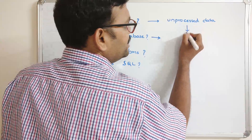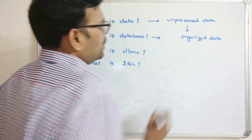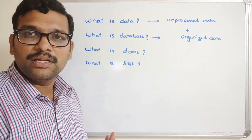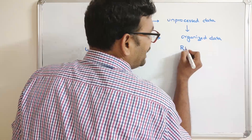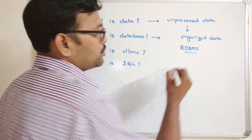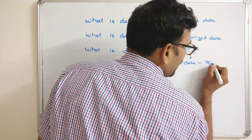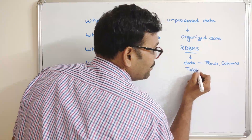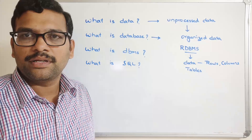Coming to the database — this data is organized here. The storage of organized data is known as a database. Based upon the model, the data will be organized. In RDBMS, the relational database model, the data is stored in terms of rows and columns — simply we can say them as a table.